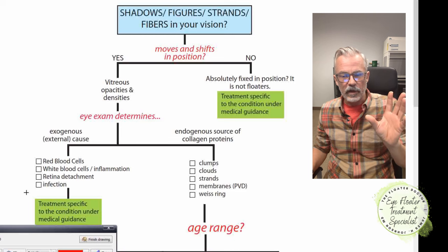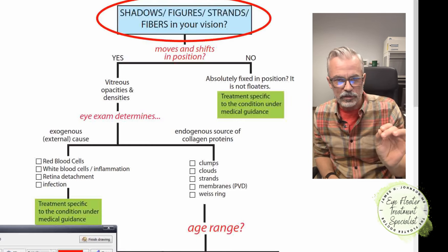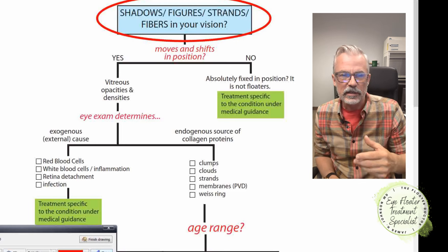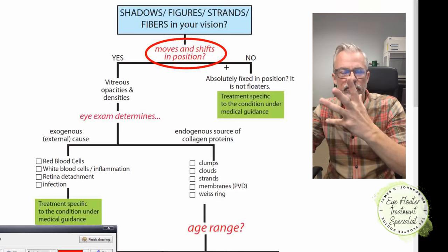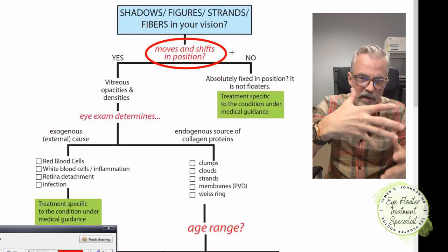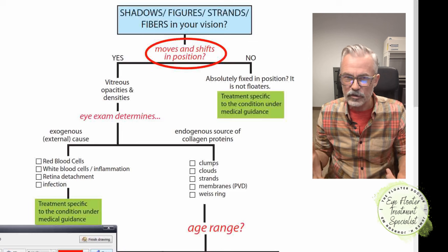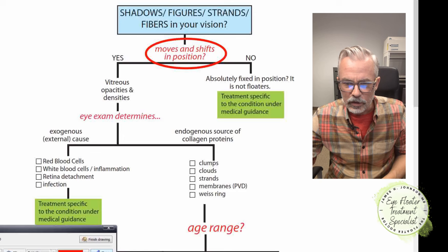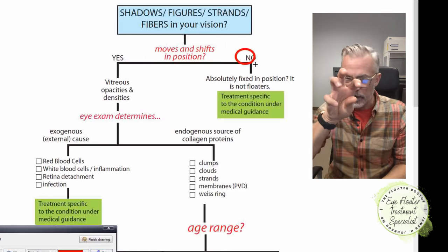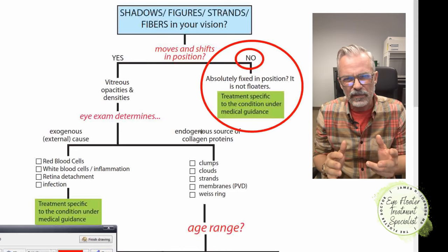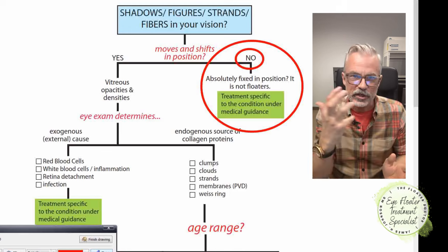If you were to come in to your doctor and say you've got shadows and figures and strands going on with your vision, one of the first questions I would ask is: does this phenomenon move and shift with your vision? You move your head and this thing kind of goes across, then tumbles back to a stereotypical position — this is characteristic of something in the vitreous. If it moves even a little bit, the answer is yes.